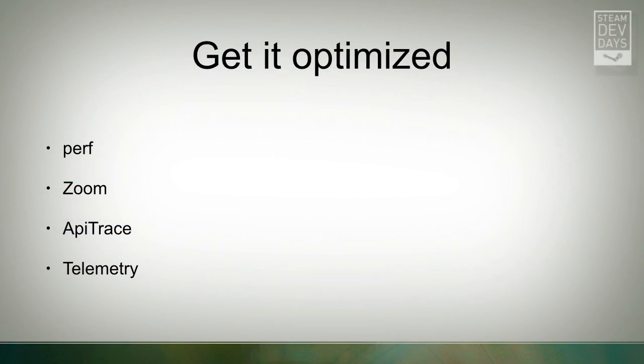Now let's talk about getting it optimized. You have your game running and debugged, but it's really, really slow. On the rendering side we talked about gdebugger and apitrace. On the CPU side, there's perf — a command-line tool. Zoom is a commercial offering that reminds me a lot of Shark or Instruments on Mac OS — it's incredible and will tell you exactly where your CPU time is going. Telemetry from Rad Game Tools is incredibly good: it works on every platform, and the client-side tools actually work on Linux so you don't have to switch to Windows to get information.